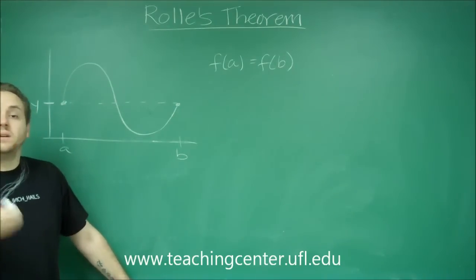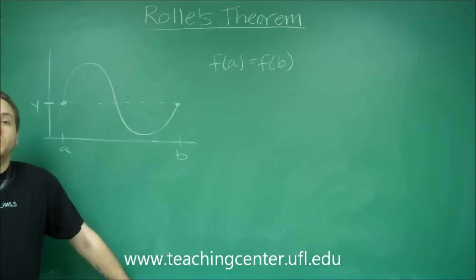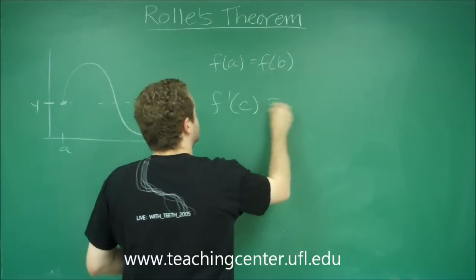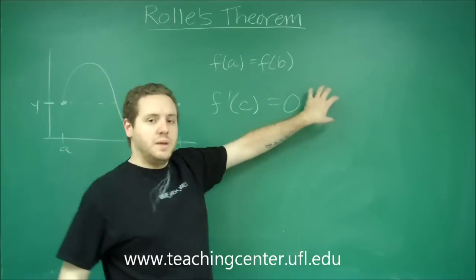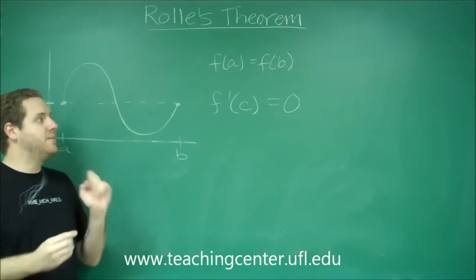the derivative is going to be, like the mean value theorem says, the same slope as the dotted line, which we know is zero in this case because it's horizontal. So you don't need to write f of b minus f of a over b minus a because you know it's going to be zero if the endpoints are equal.